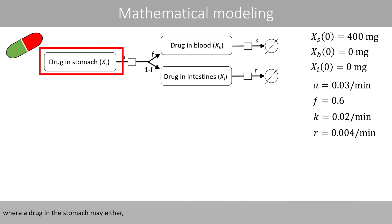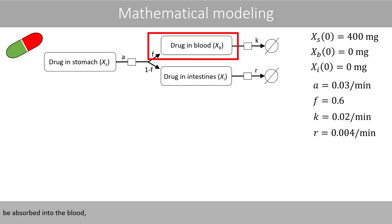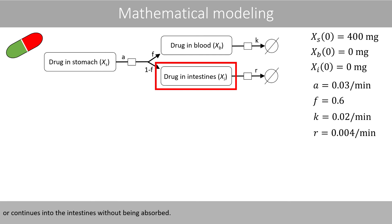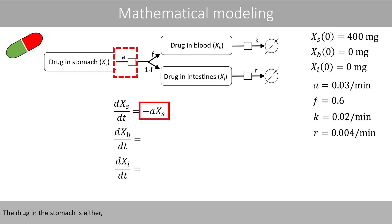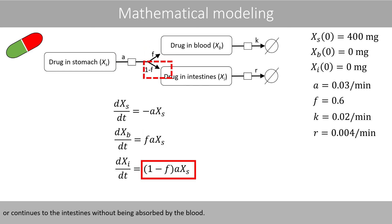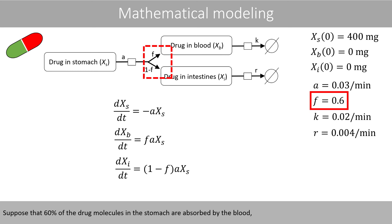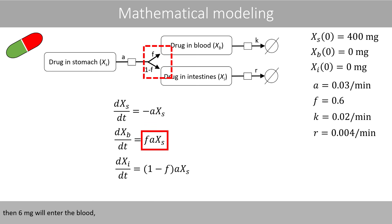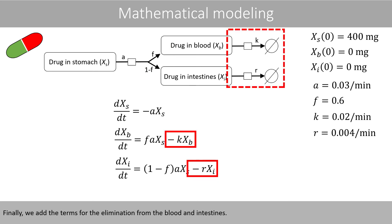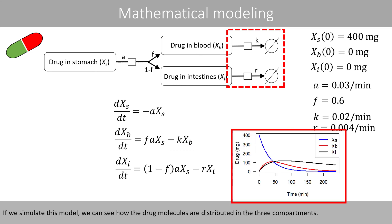We will now look at a three-compartment system where a drug in the stomach may either be absorbed into the blood, or continue into the intestines without being absorbed. Since we have three variables, we need three differential equations. Suppose that 60% of the molecules in the stomach are absorbed by the blood, whereas 40% are not. If 10 mg of the drug leaves the stomach, then 6 mg will enter the blood and 4 mg will enter the intestines. We then add the terms for elimination from the blood and the intestines, and simulate how the drug molecules are distributed across the three compartments.